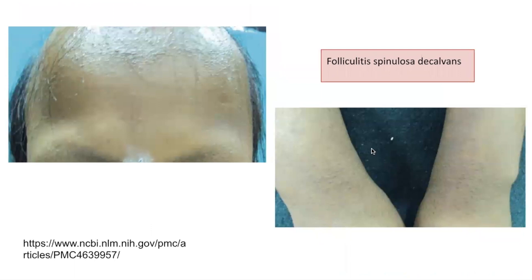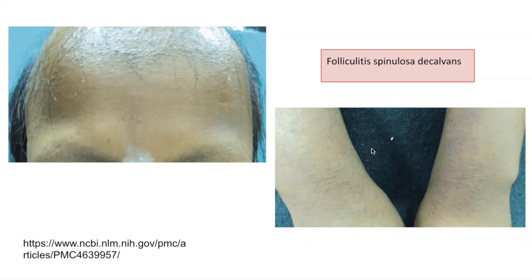The next variant is keratosis follicularis spinulosa decalvans, also known as KFSD. This is a hereditary disorder of the hair follicle which presents with both scarring alopecia and follicular papules affecting the scalp and other body areas. It usually follows an X-linked pattern of inheritance, but sporadic and autosomal dominant cases can also be seen.